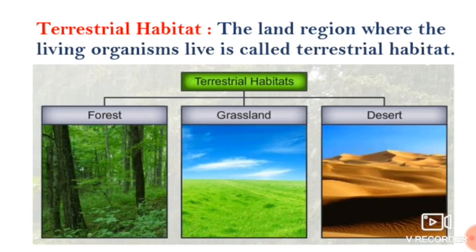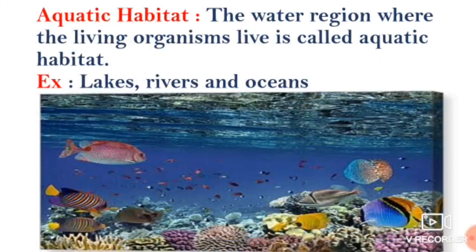So, the examples for terrestrial habitat are forest, grassland and desert. The next type is aquatic habitat. What is meant by aqua?